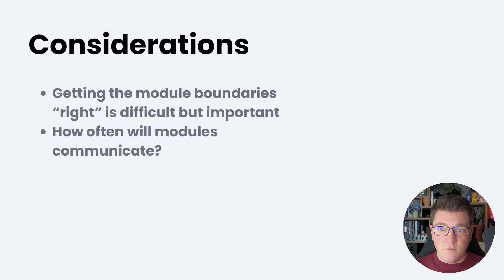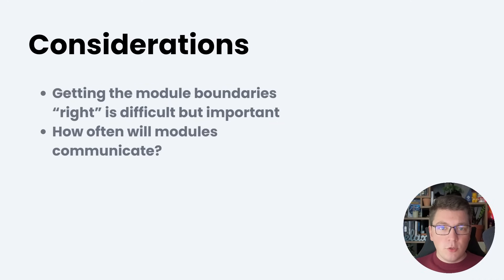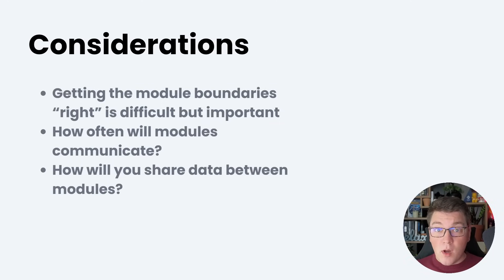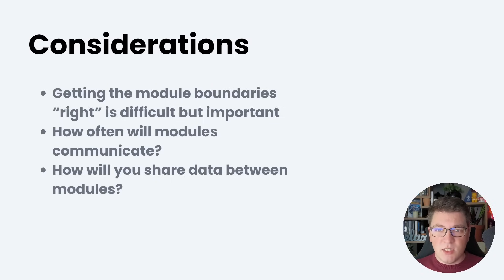A few questions you should ask yourself when deciding how to split your modules. The first is: how often will your modules communicate? This is an important indicator of how dependent your modules are on each other. In general, the more communication you see between modules, the higher the likelihood that they should probably be merged. Another question is: how are you going to share data between modules? Do they need data in real time, or can it be propagated using events where you'll deal with eventual consistency?